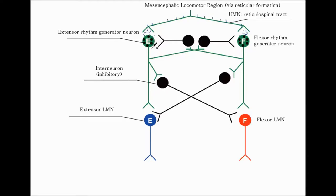Whenever they fire, initially both rhythm generators will fire at the same time. But because they mutually inhibit each other, you'll actually see no response in the muscles. Inhibitory neurotransmitters are fired here and here, which facilitates silencing the activation of the opposite rhythm generators.